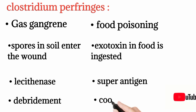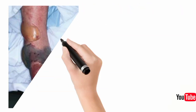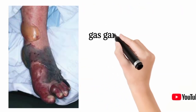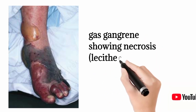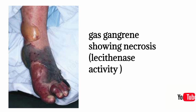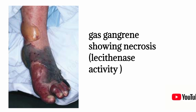Prevention of gas gangrene involves debridement of the wound; for food poisoning, proper cooking prevents ingestion of the exotoxin. Gas is also produced by these organisms, giving the condition the term 'gas gangrene.' A figure shows the area of necrosis on the foot caused by lecithinase.